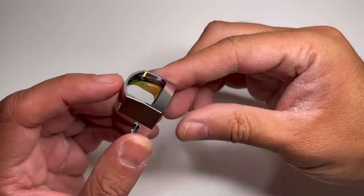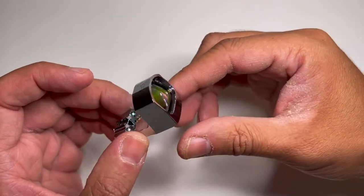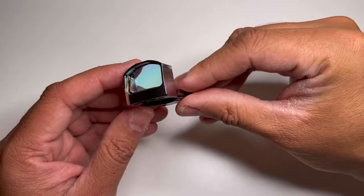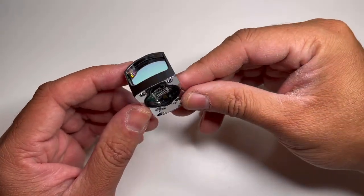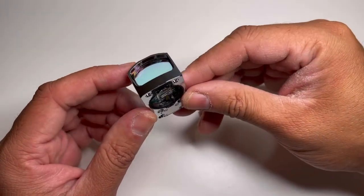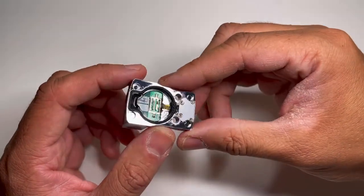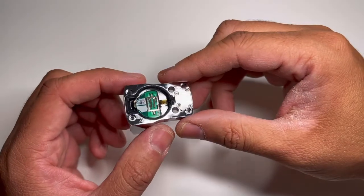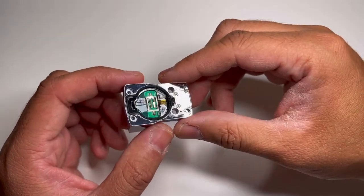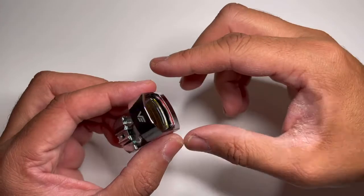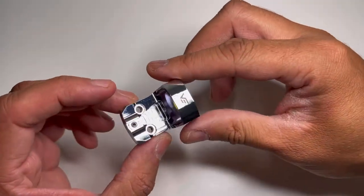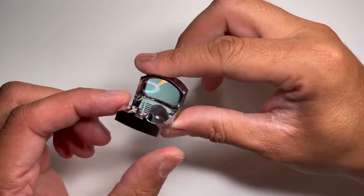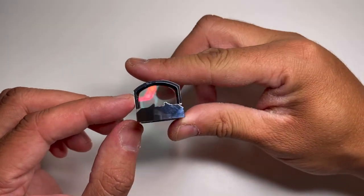Again, this is the same construction, aircraft grade aluminum, believe it's IP6 or 7 durability. Bottom mount battery. Again, this fits the RMSC footprint perfectly. It just drops right on and then bolts right up. It's nice, as well as co-witness capability.